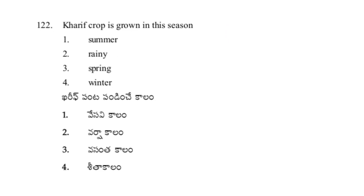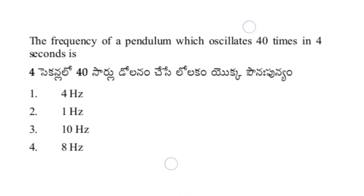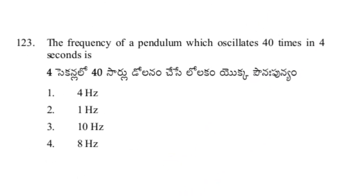The Kharif crop is grown in the rainy season — option 2, answer. Next question: the frequency of a pendulum which oscillates 40 times in 4 seconds is option 3, answer: 10 Hz.